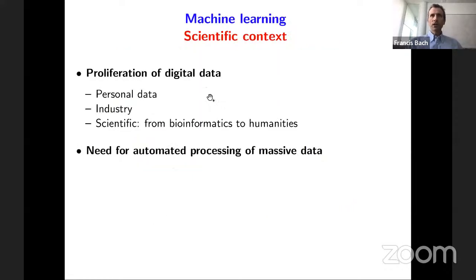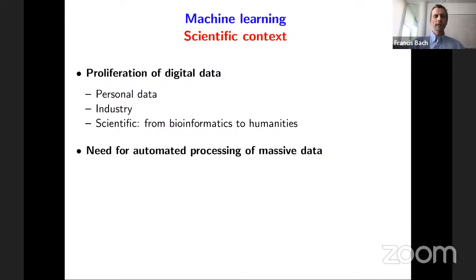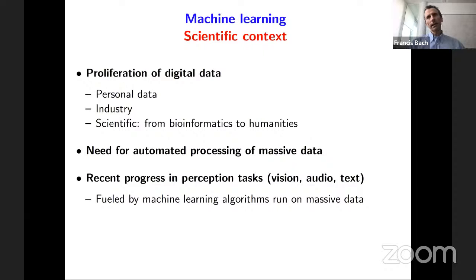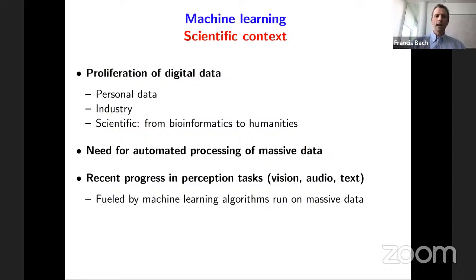Today I'm going to talk about machine learning. In the last 20 or 30 years there's been a growing need for the automatic processing of data, from personal pictures to industry and many sciences — from humanities to bioinformatics. A more recent change has been the surge of progress in perception tasks: in computer vision, machines can now recognize objects in images and videos; speech can be transcribed automatically; and natural language processing enables automatic translation. These amazing advances were fueled by machine learning algorithms run on massive data, and the goal of my talk is to highlight the algorithmic components that made this possible.